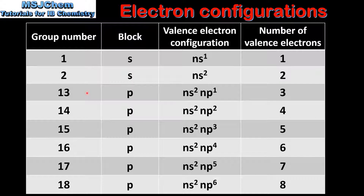For groups 13 to 18 these are all P block elements. For elements in group 13 the valence electron configuration is ns2 np1 and they have 3 valence electrons. As we go across from group 13 to 18, electrons are filling the P sublevel and the number of valence electrons increases by 1 from group to group. For example, group 14 elements have 4 valence electrons and group 15 elements have 5, increasing until group 18 where elements have 8 valence electrons.